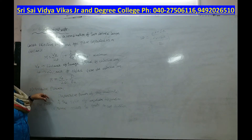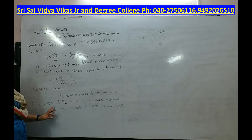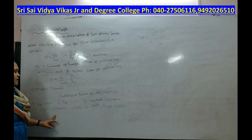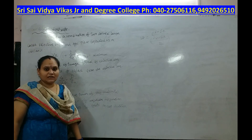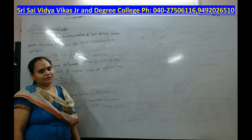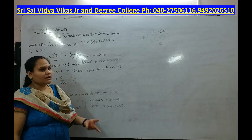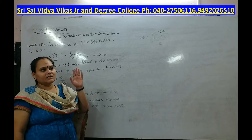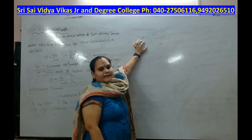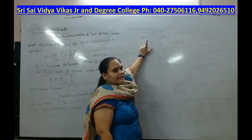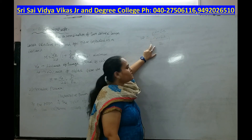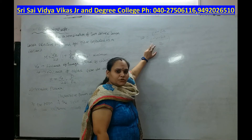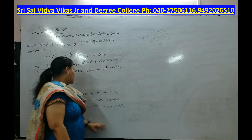Next is dispersive power. The dispersive power of the material of a prism is the ratio of the angular dispersion of two extreme colors to their mean deviation. Taking violet and red, the dispersion is δV − δR, and the mean deviation is (δV + δR)/2. So dispersive power ω = (δV − δR) / ((δV + δR)/2).